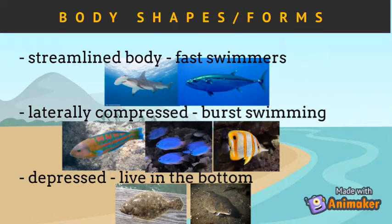Laterally compressed species are found in coral reefs, kelp beds, and rocky reefs. This shape is efficient for burst swimming to escape enemies and capture food. Species with this shape are the wrasses, damselfish, and butterflyfishes, among others.